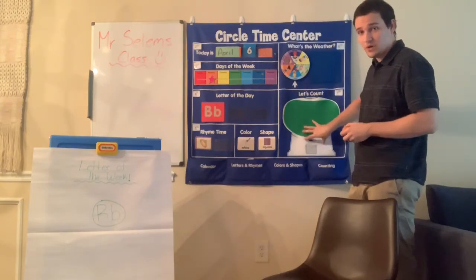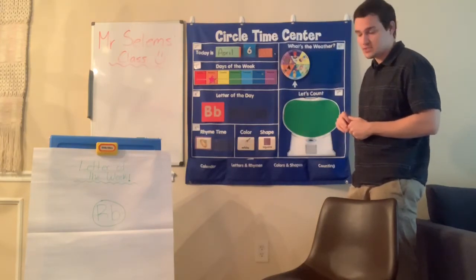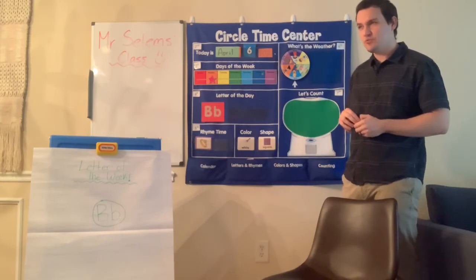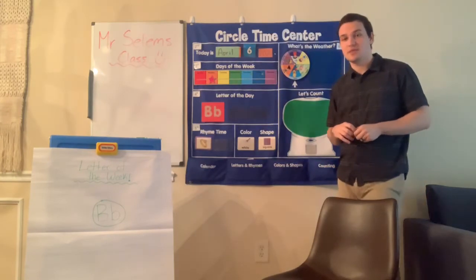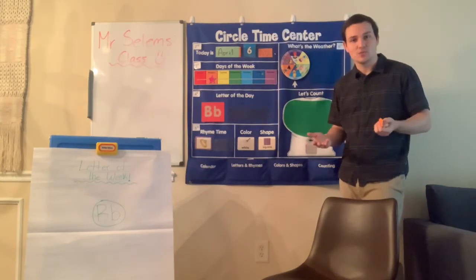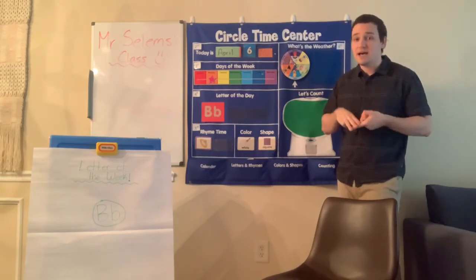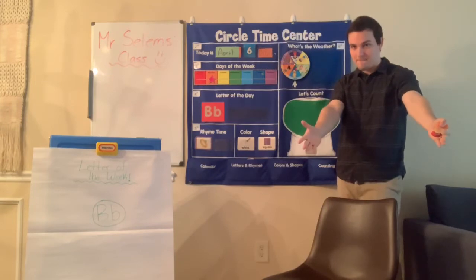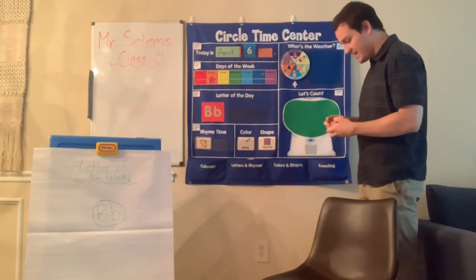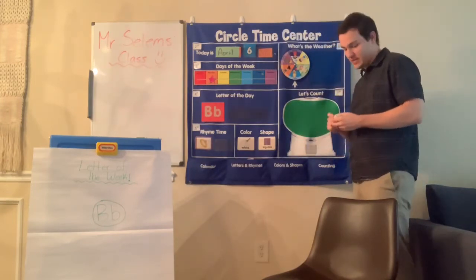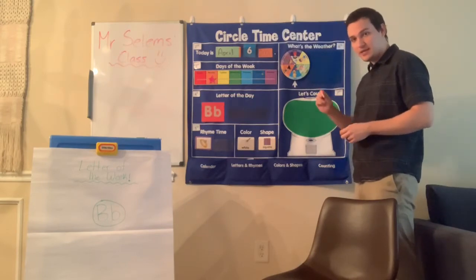Alright, so now we're going to count our gumballs together. If I remember right, last week we ended with the number nine. So what number comes after nine? We have seven, eight, nine... perfect, ten. So let's count out ten gumballs together. Ready? Here we go.